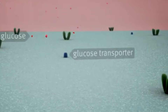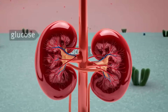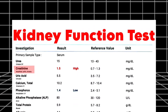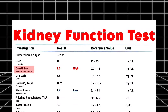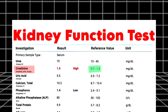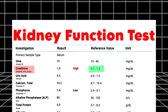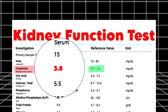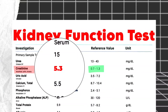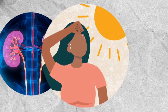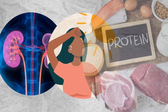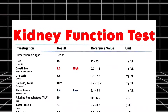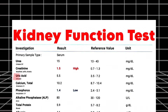High urea levels may indicate kidney disease, heart failure, or dehydration, while low urea levels may indicate liver disease, malnutrition, or over-hydration. Next is creatinine. Creatinine is a waste product from muscle metabolism. The normal level of creatinine in blood is between 0.7 to 1.3 milligrams per deciliter.